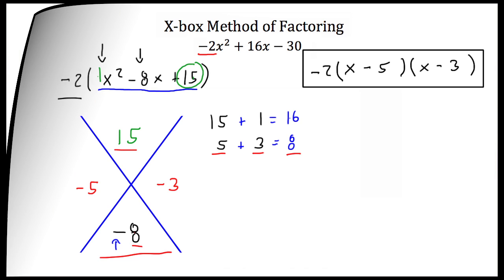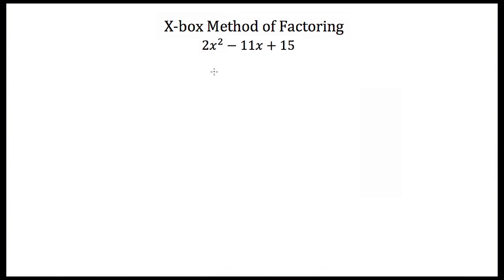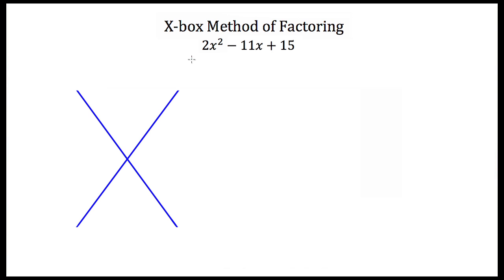Now let's try another example. Here we have 2x squared minus 11x plus 15. Our leading coefficient is positive, so we don't have to worry about that. We need to look for any greatest common factors, but it doesn't appear that there are any. So we're ready to start the Xbox method of factoring. We draw our big X, then take the coefficient of x squared — this 2 — and our constant term 15, and multiply them together. 2 times 15 is 30. Our middle term, negative 11, goes in the bottom.